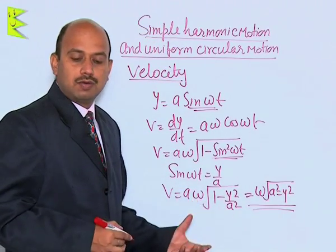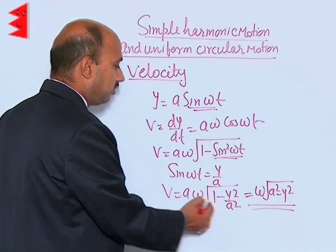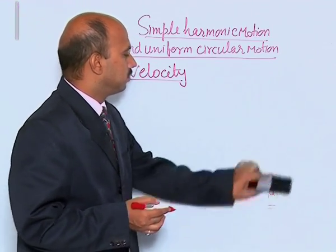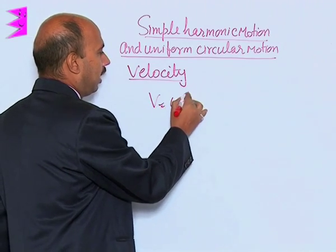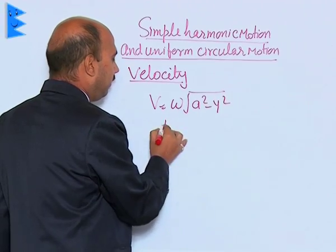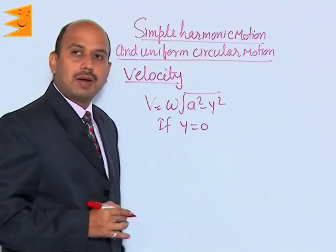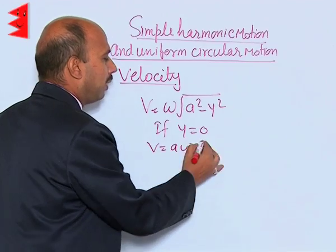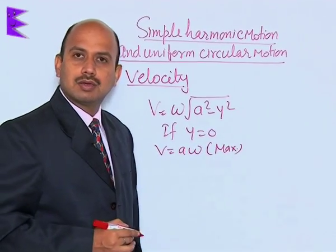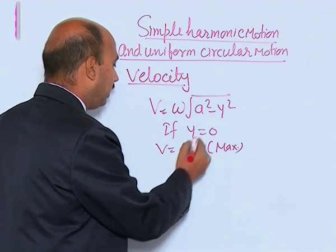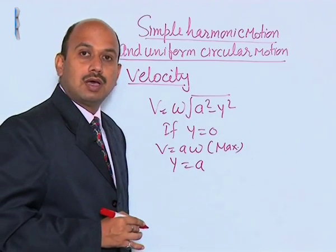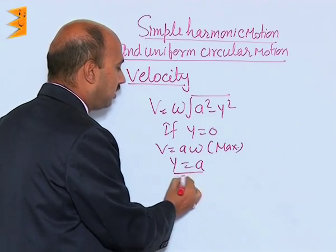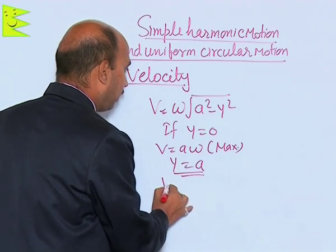This is the expression for velocity. In this expression, V is equal to omega times the square root of a squared minus y squared. When y is equal to 0, meaning the particle is at the mean position, the displacement is 0, and we get V is equal to a omega — that is the maximum velocity. When y is equal to a, that is at the extreme position, as shown in the circle at position b or d, the velocity is equal to 0.